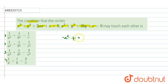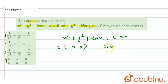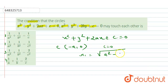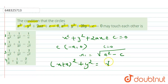For the first equation x² + y² + 2ax + c = 0, we find the center is (-a, 0) and c becomes a² - c. We find r1, which equals √(a² - c). The equation of the circle becomes (x + a)² + y² = (√(a² - c))².